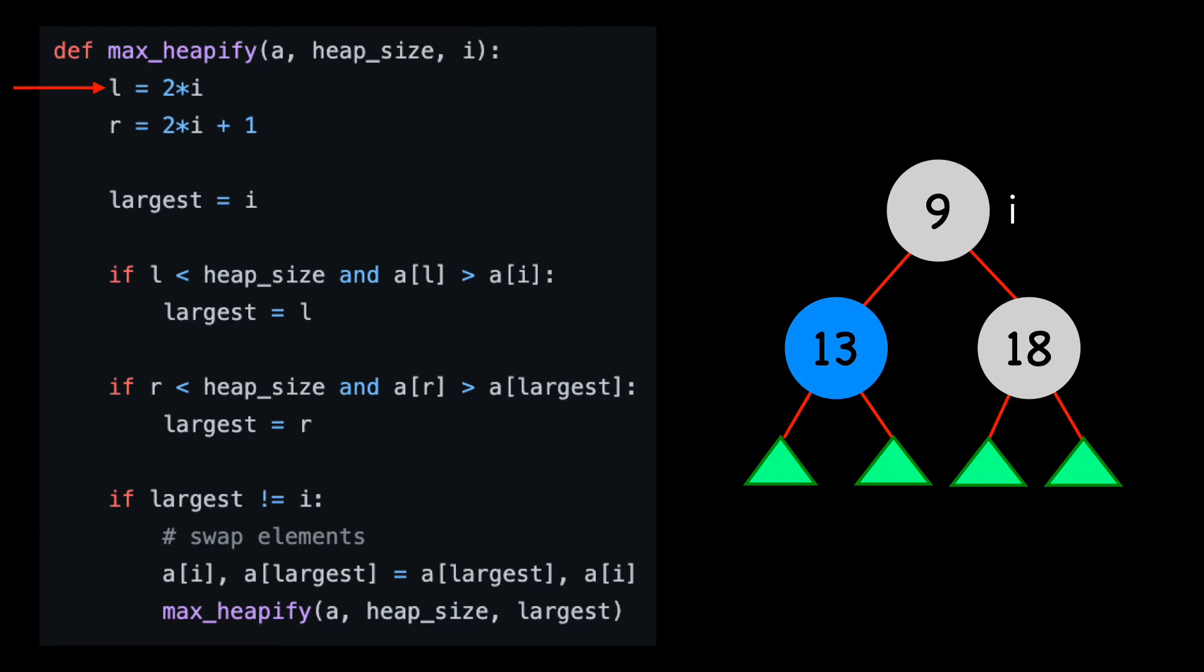We start by setting the left index, which is 2 times i, and the right index, which is 2 times i plus 1. Let's create a variable called largest and set it equal to i. We then compare the value of i's left child with the value of i, and if it's larger, we set largest equal to the left child. In this case it is, so we move our largest pointer.